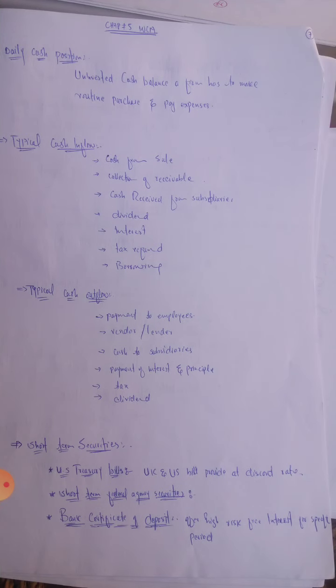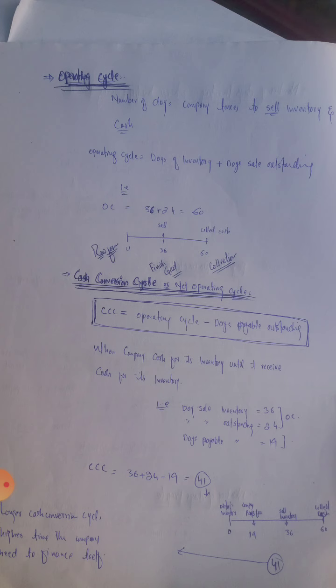In the previous lectures we discussed in detail what is the liquidity of a company and how we can measure it. For the measurement of liquidity we have five or six different methods: the current ratio, quick ratio, receivable turnover, inventory turnover, and payable turnover. All these are various methods by which we can easily measure the liquidity of a company or firm.